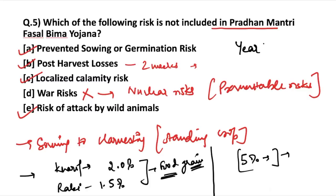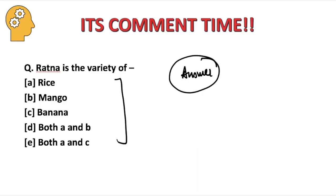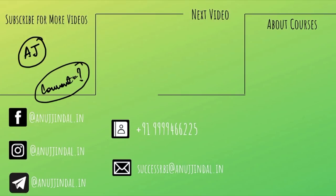Now, the question is: in which year was the Pradhan Mantri Fasal Bima Yojana launched? Mention your answer in the comments below. Also, another question for you: Ratna is the variety of which of the following? I will provide the answer in the next video — do mention your answers in the comments. I hope you are preparing well. Do share these videos with others preparing for the NABAT exam, and don't forget to subscribe to our channel. We'll be coming up with the next video soon.